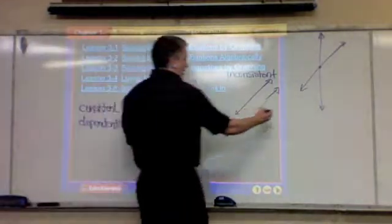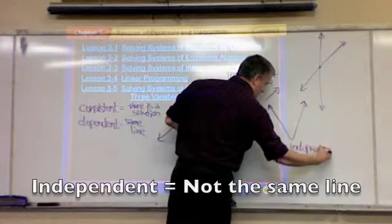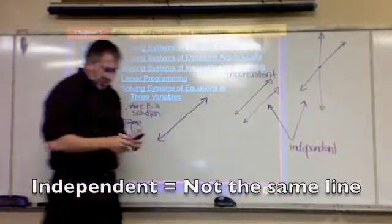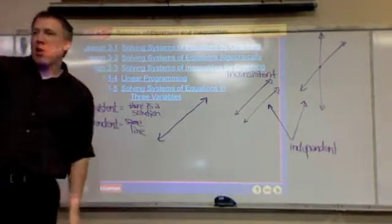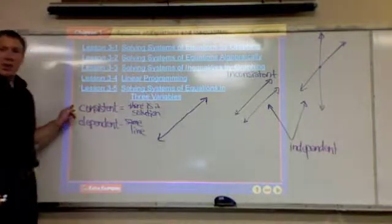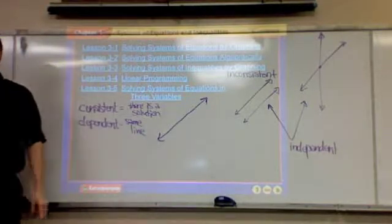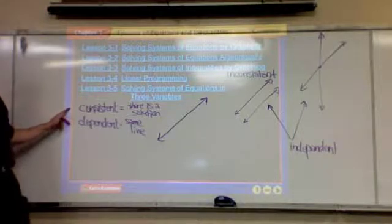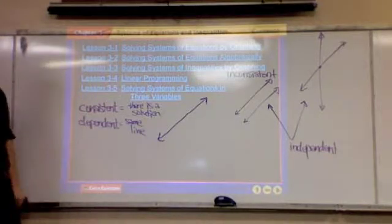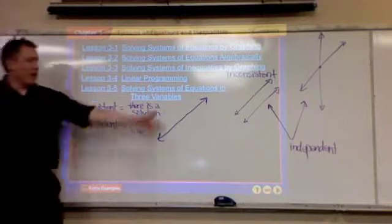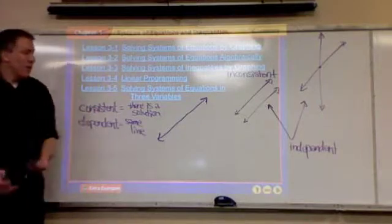So what do we call the others? Independent. These are important words. What does consistent mean? It means they cross somewhere — there's a solution. What does dependent mean? The same line. The prefix 'in' means the opposite: inconsistent means they don't have a solution, they don't cross. Independent means they're not the same line.